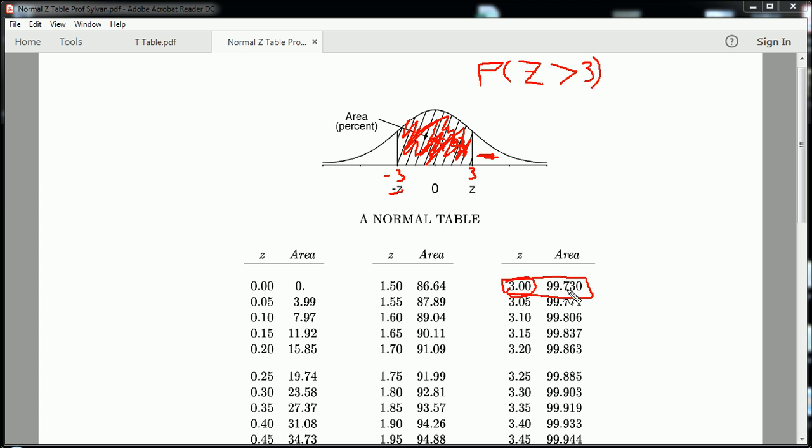Hypothetically, let's say we wanted to know this. Well, we would come and find 3 here, and we see that's 99.73. Actually, let's clean up a bit. We'd see that that is 99.73.